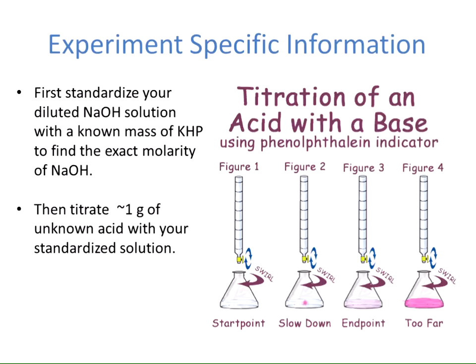With the titration of an acid with a base, you will use phenolphthalein as an indicator. Start adding your solution to the flask and swirl. As you begin to see pink appear, slow down, and stop at a very slight pink color — this is your endpoint. If your solution gets really pink, you have gone too far and over-titrated.